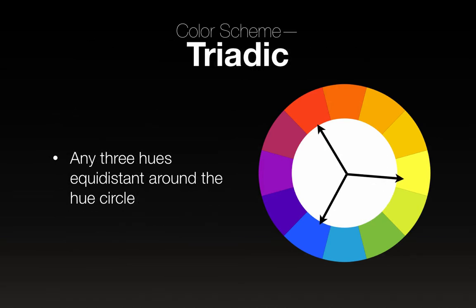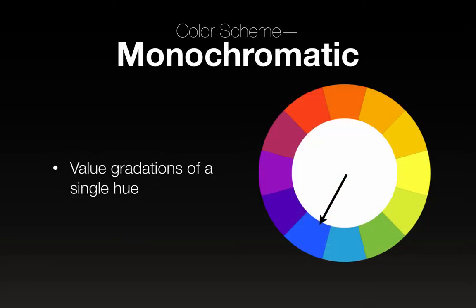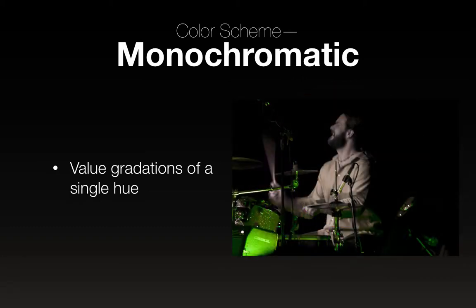Triadic is three hues equidistant around the hue circle. Here's an example of a triadic design — another example is the Burger King logo. Monochromatic is value gradations on a single hue — one hue only. And here's a monochromatic image.